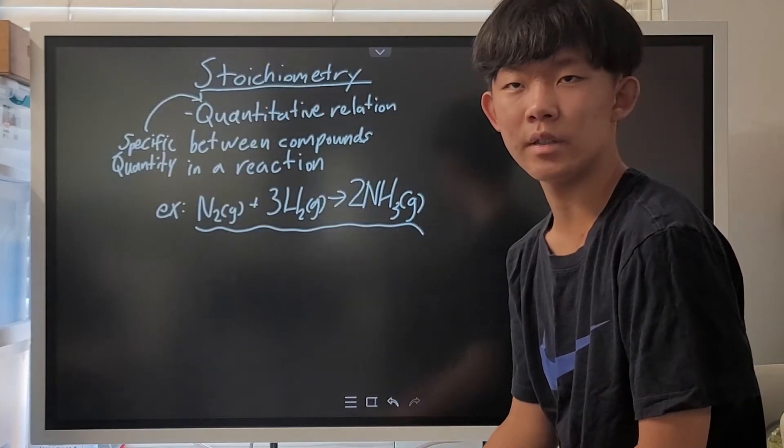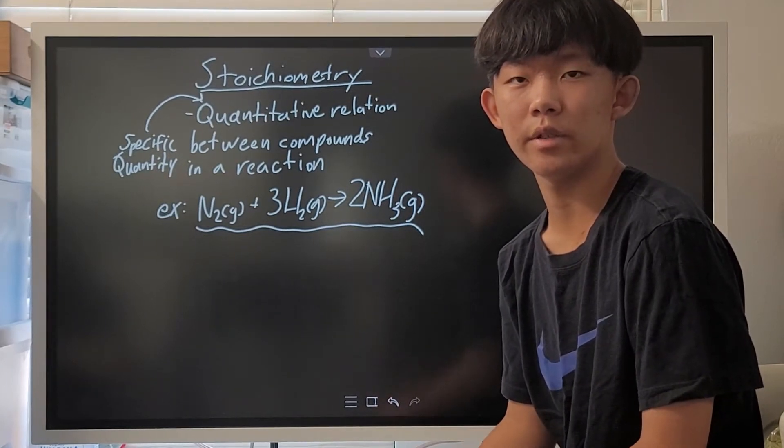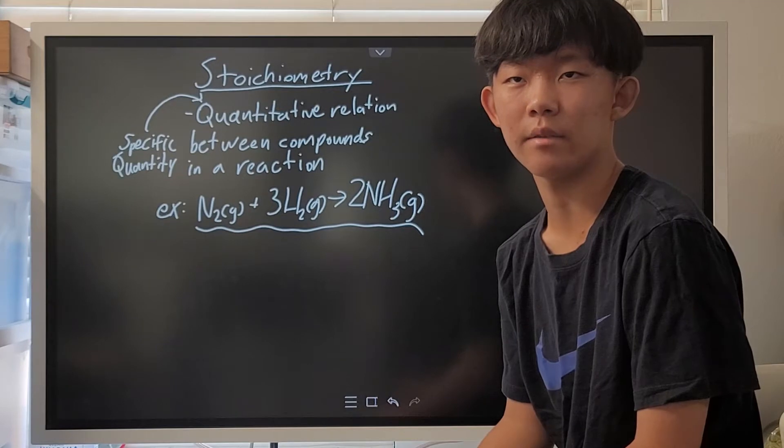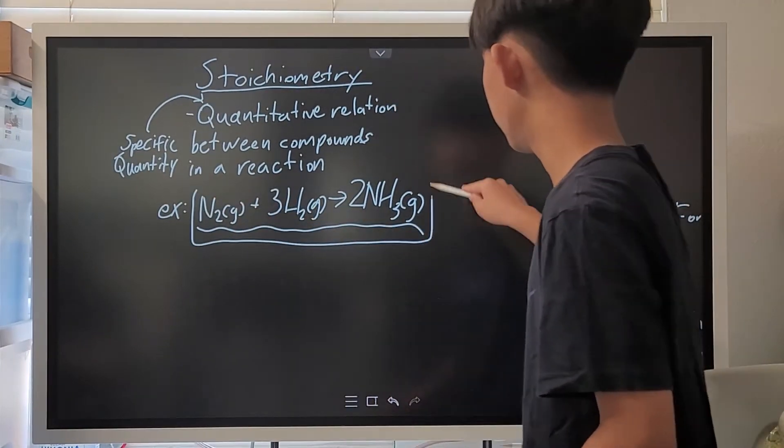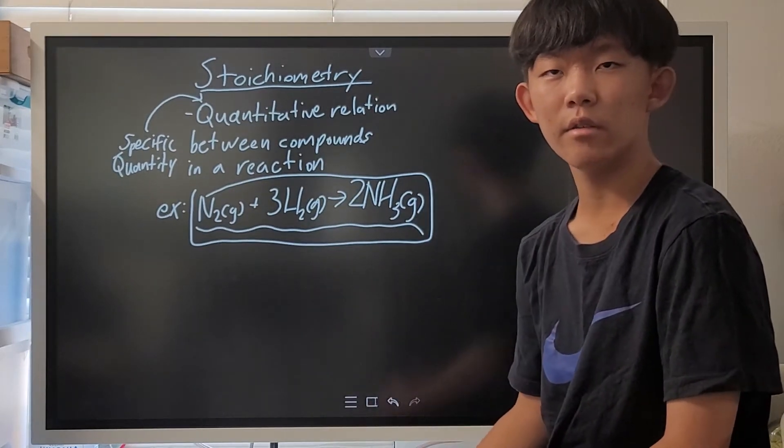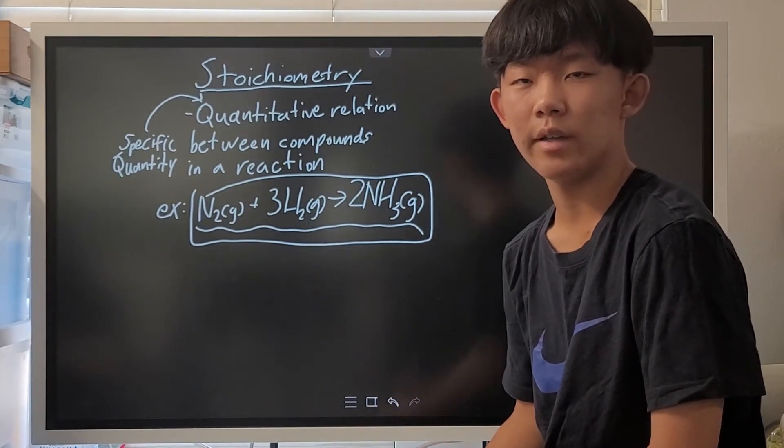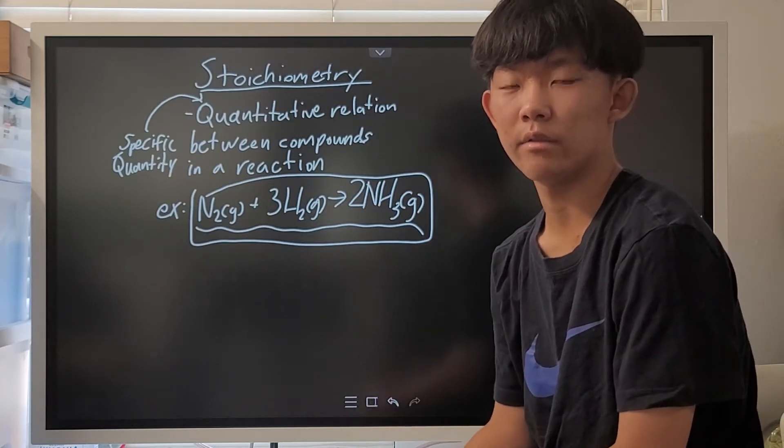By quantitative, we mean a specific quantity, like 1 to 3 or 5 to 2 or something like that. For example, in this famous reaction, which is used to make ammonia gas even to the modern day, we can use stoichiometry to find how much hydrogen and nitrogen we need to get the desired quantity of ammonia gas.